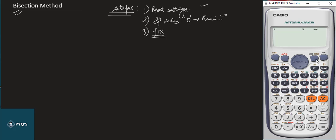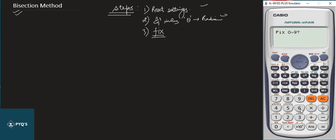Press Shift and go to Setup, where you can see FIX. If the question asks you to find the root up to six decimal places, go to FIX and select 6 — now your calculation will be fixed to six significant decimal figures.